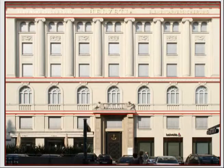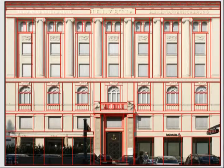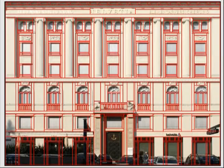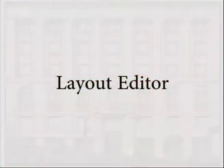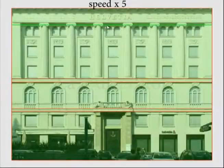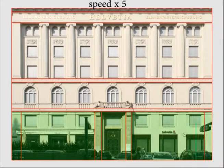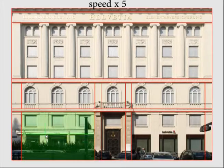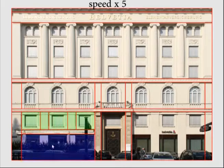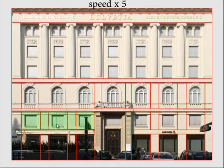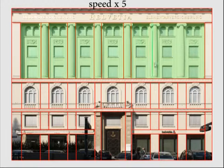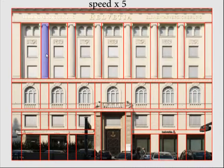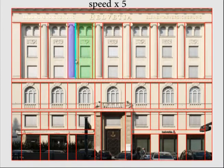Here is a visualisation of the generated grammar. We show an example of how a user generates an input layout using the semi-automatic facade editor. It usually takes 5 to 30 minutes to create an initial layout. The time depends on the complexity of the facade, the detail of the reconstruction, and how many errors are made during the reconstruction.